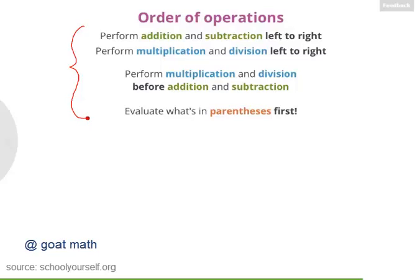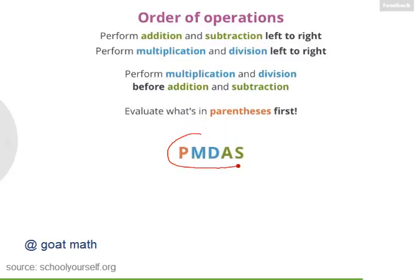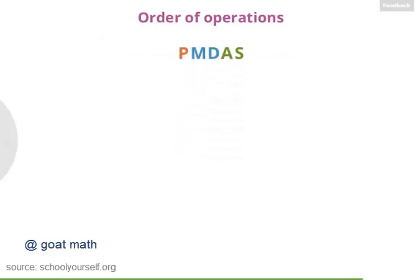Now, remembering all these rules for the order of operations can be tricky. One way to remember is to take the first letter of each operation — that's P, M, D, A, S. First, you should evaluate what's in parentheses. Then you should perform multiplication and division together from left to right. And finally, you should perform addition and subtraction from left to right.